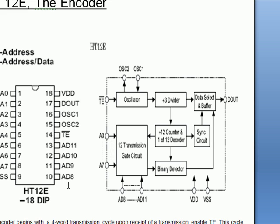The data set on these 12 lines, that is this 8 plus this 4, these 12 lines is serially transmitted when the transmission enable pin, that is pin number 14, is taken low, that is from high to low.